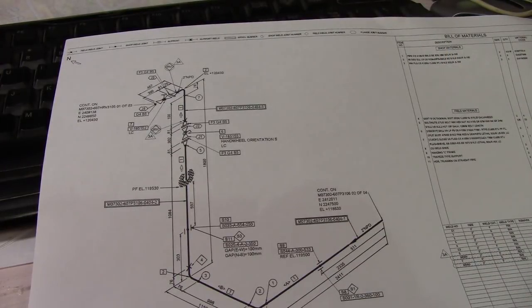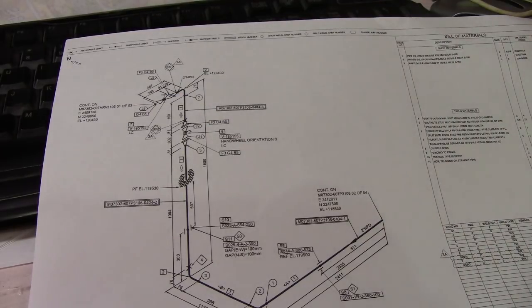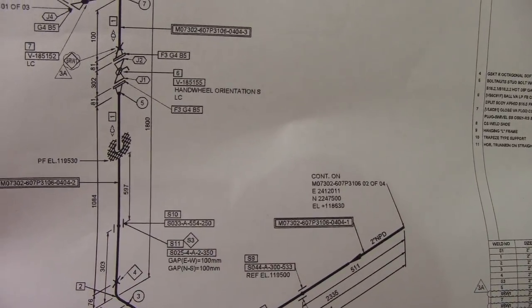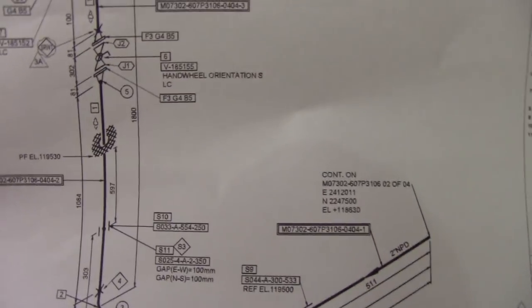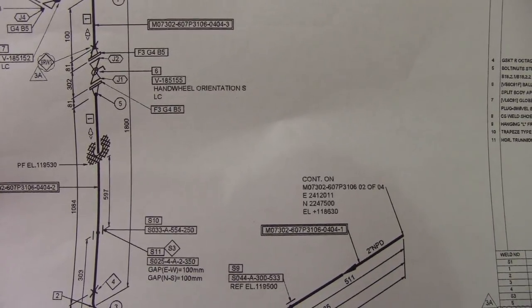However, based on the situation, if the line is critical, put it in Category A, because if the line is critical it must always be straight. Also, depending on the test — if this is a visual test, make sure everything in the isometric is Category A.